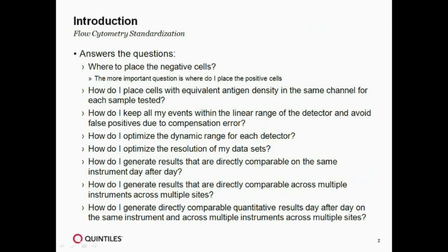Let's ask some questions to start — probably the most important being: where do we place negative cells when we're running our flow cytometers? I started doing flow cytometry in 1978, and as I visited various laboratories, I found that people had their favorite way of placing a negative. They would smash it up against the baseline, or they'd want it off the baseline. The problem was that was the wrong question to ask.